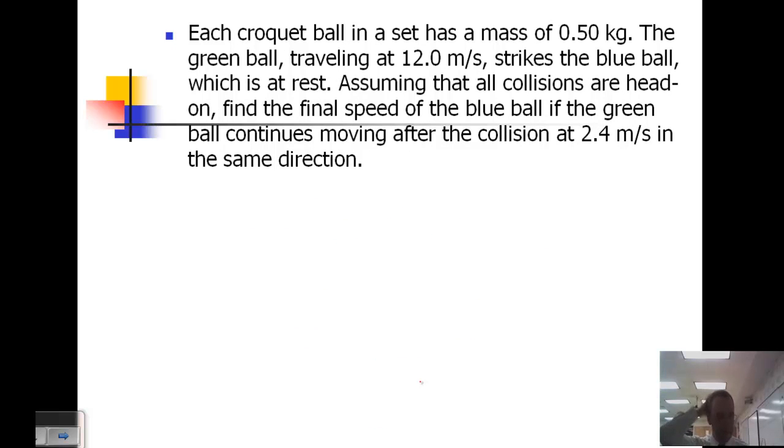The next problem. Each croquet ball in a set has a mass of 0.5 kilograms. The green ball, which is traveling at 12 meters per second, strikes the blue ball, which is at rest. Assuming that all collisions are head-on, find the speed of the blue ball if the green ball continues moving after the collision at 2.4 meters per second in the same direction.